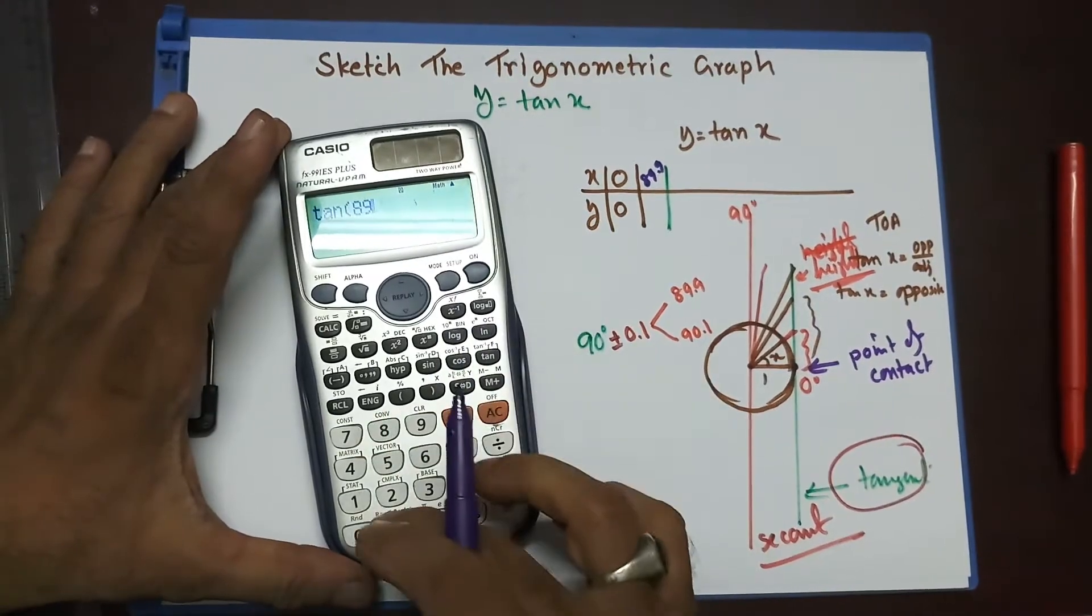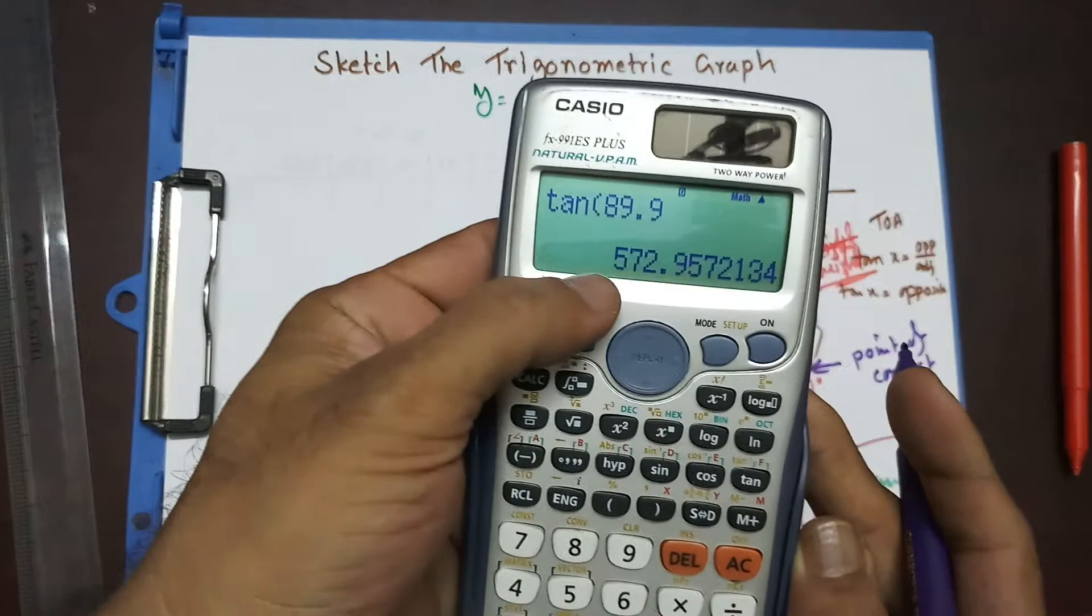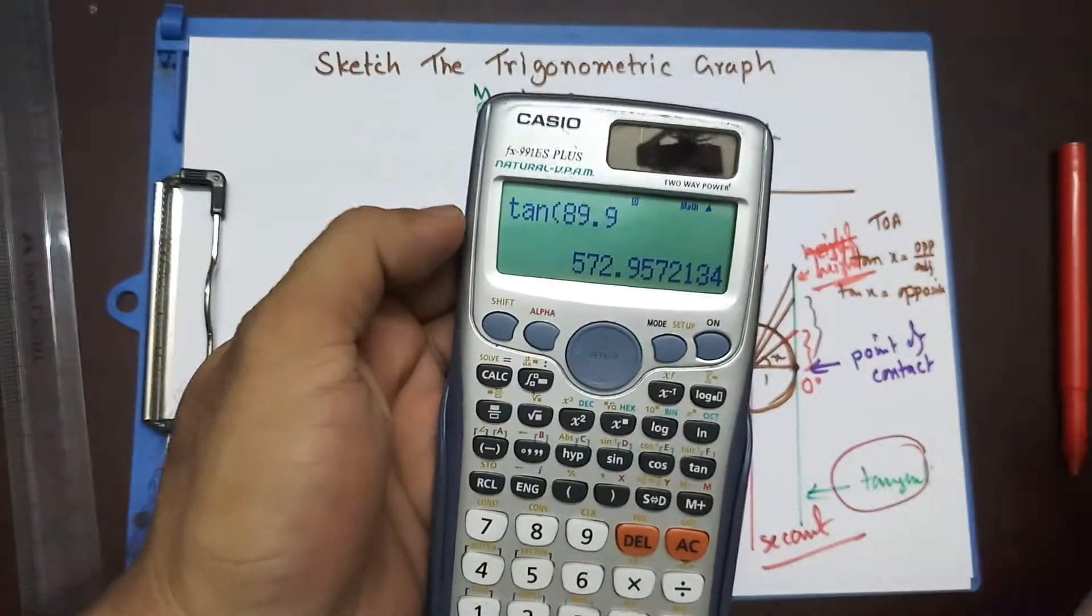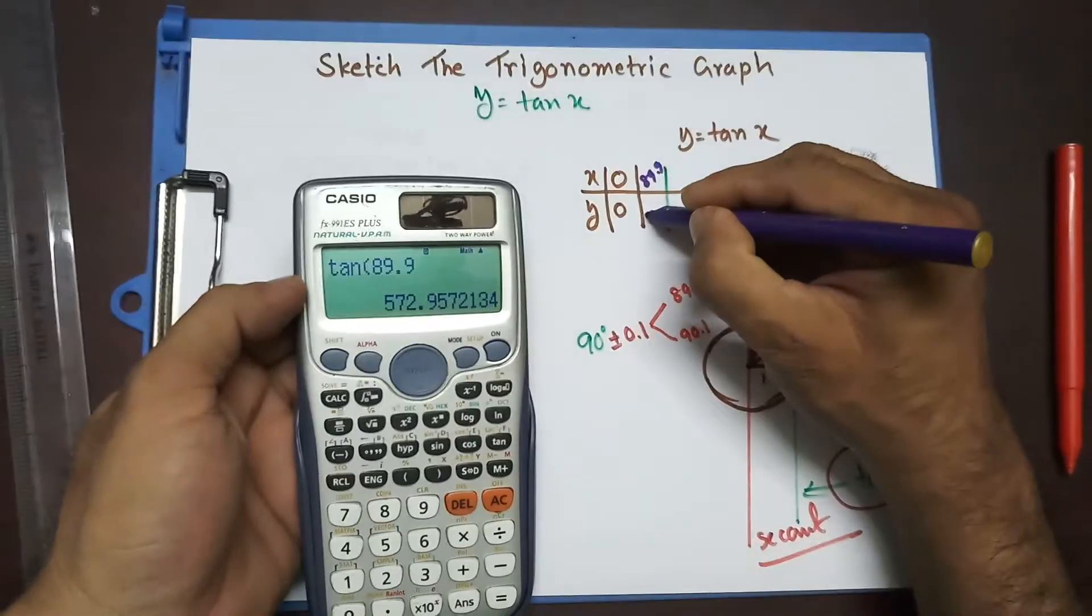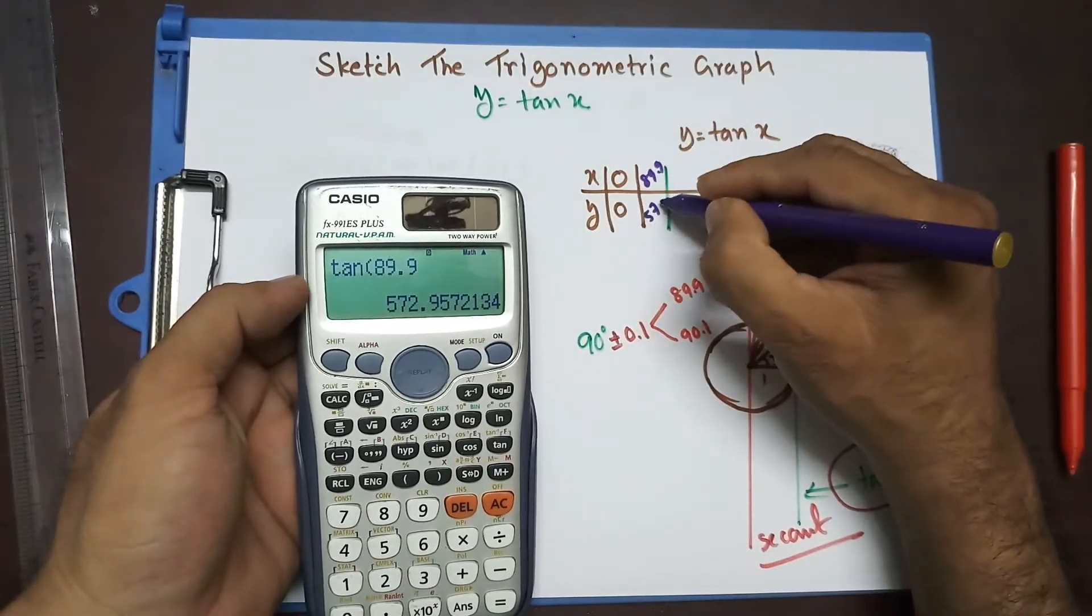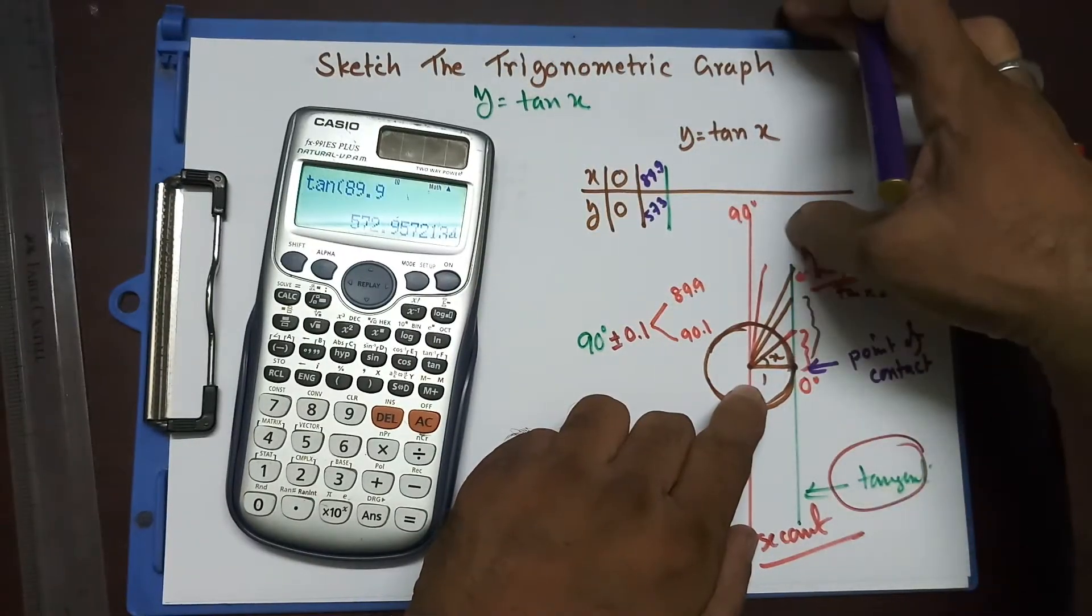Now, tan 89.9, that becomes a very big number, 572.95 something. So, correct to the nearest whole number. I got 573. That means this length, it becomes very big at 89.9.